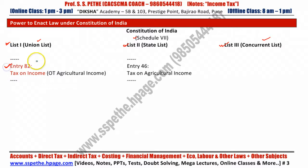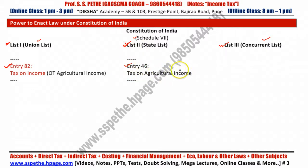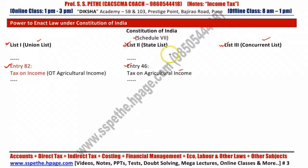Using this power, the Centre levies income tax. As far as agriculture income is concerned, you can see List 2, Entry Number 46: Tax on Agriculture Income. It means only state governments can levy the tax on agriculture income. This is all about the powers to levy tax, which have been bifurcated between the Centre and the State.